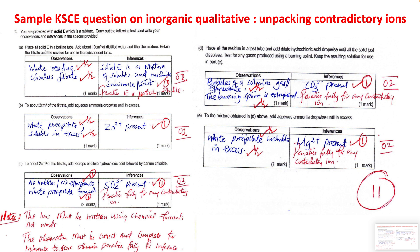Many students, on adding water and seeing a residue, write 'white suspension' or 'white precipitate.' You cannot get a precipitate on adding water, so 'white precipitate' is wrong here. The correct observation is a white residue and a colorless filtrate.